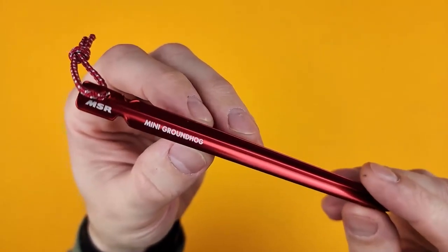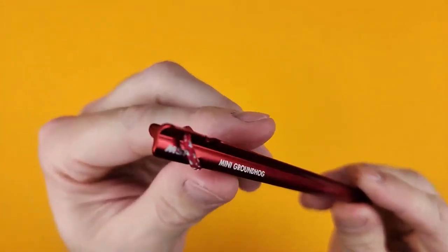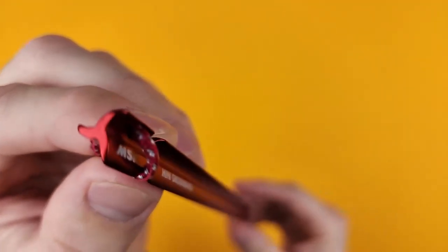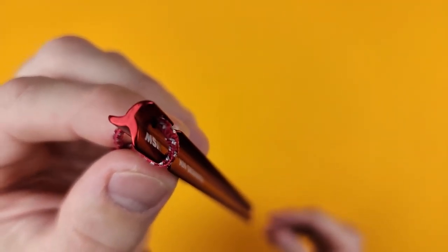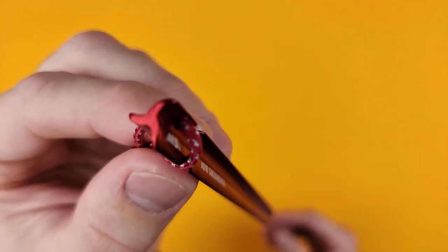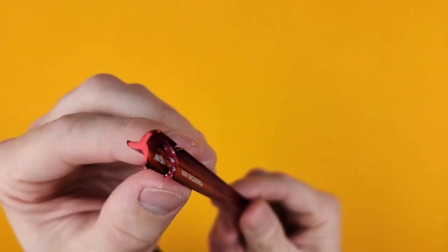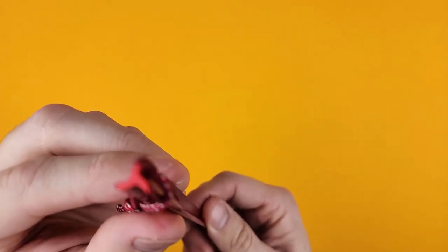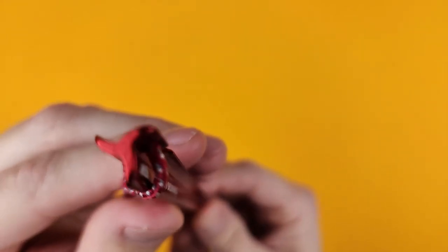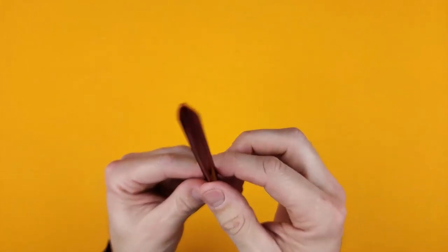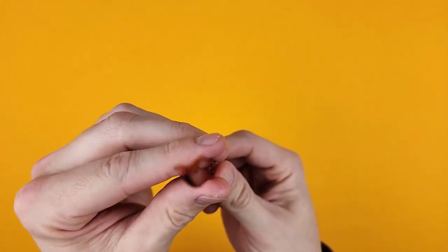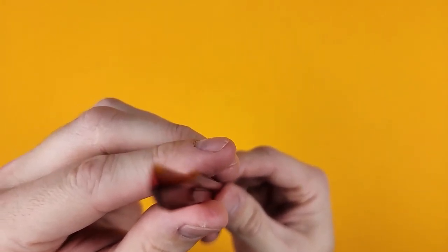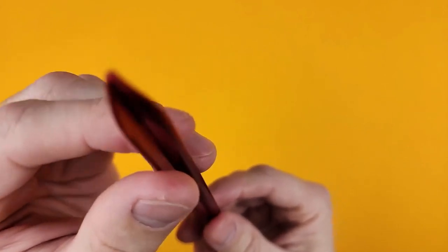If we take a look up close at the Mini Groundhog, you'll see this is a wire-shaped peg but it has a little bit of a curve or a wave to it. Very difficult to get this to focus on the right place, but that curve, that wave, is what makes these unique compared to your stock standard cheap wire pegs that are straight-edged and they bend very easily.